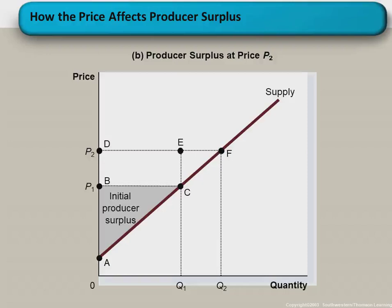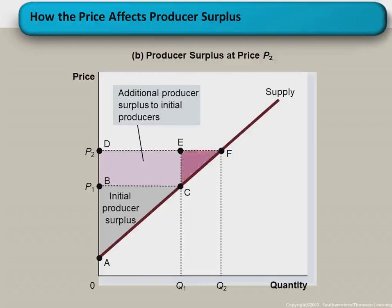Area BCDE will be the new surplus which accrues to the initial producers in the market — this is the additional producer surplus to the incumbent producers. Area CEF will be the surplus which accrues to the new firms just joining the market. Therefore, the total producer surplus will be area ADF after the price increase to P2.